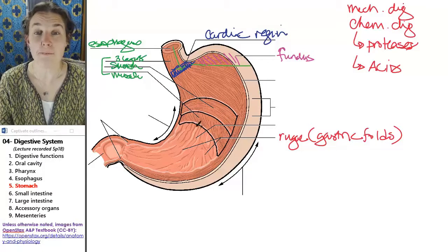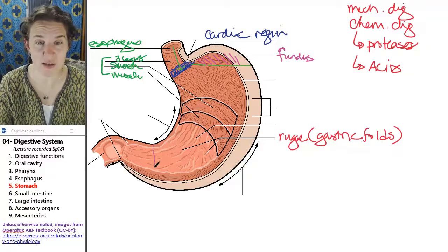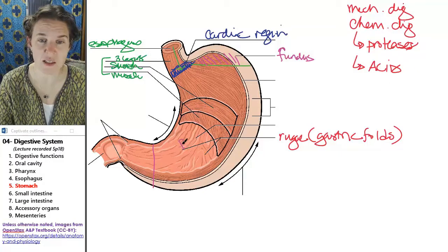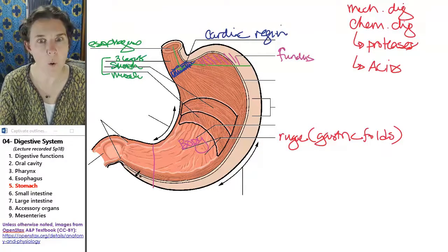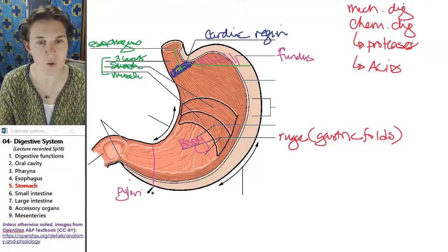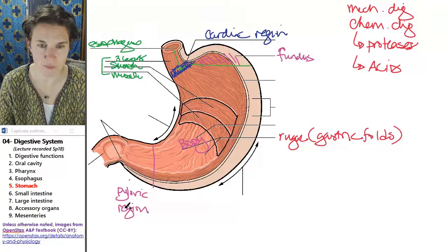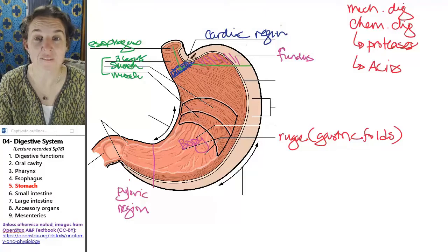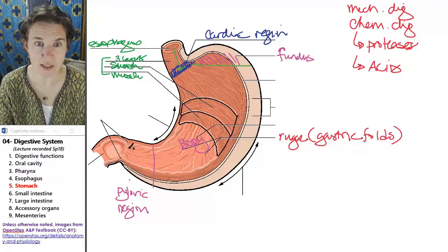The body is the bulk of the stomach. So this whole thing is the body. Everything that isn't fundus or pylorus or pyloric region. So the pyloric region of the stomach, and the fundus of the stomach and the cardiac region, everything else is the body of the stomach.